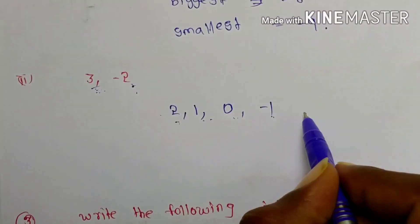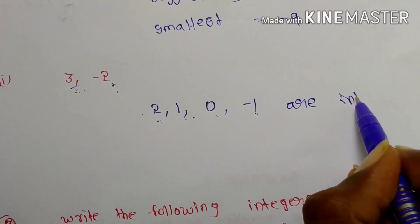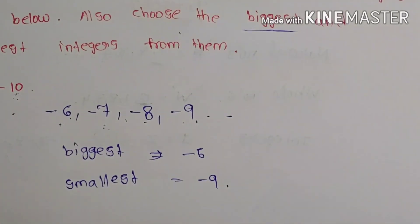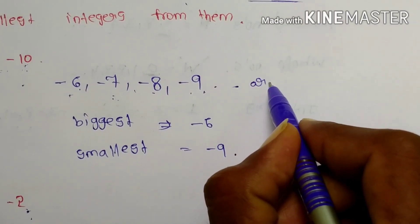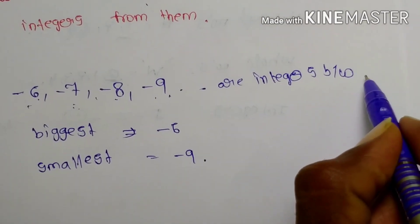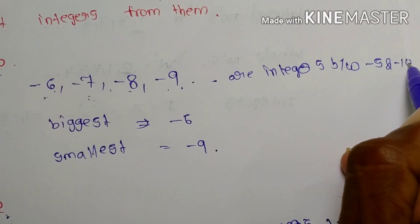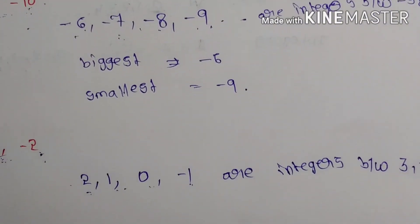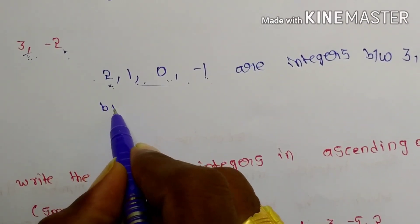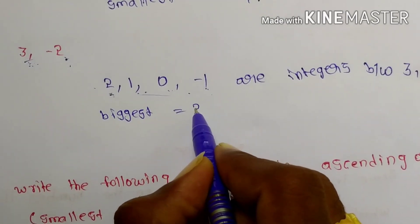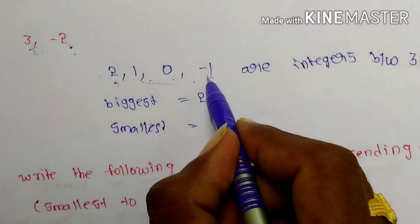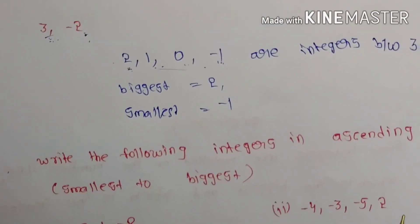So the integers between 3 and minus 2 are 2, 1, 0, minus 1. Next, integers between minus 5 and minus 2 are minus 4, minus 3. The biggest integer here is minus 2 and the smallest integer is minus 4. Very easy — you can copy and write it.